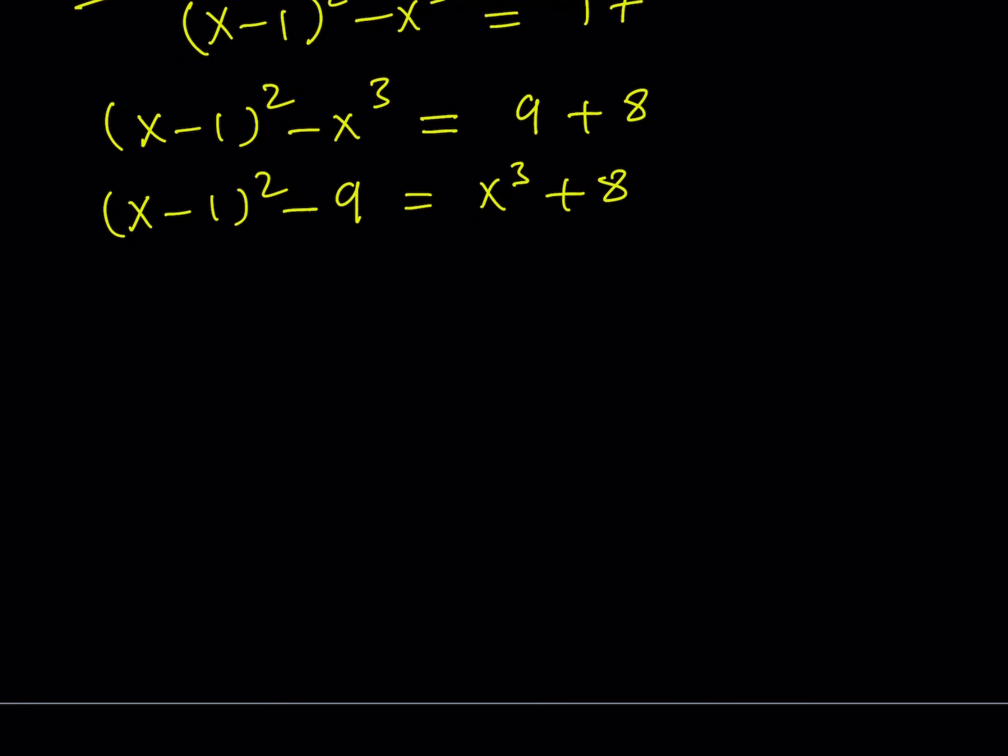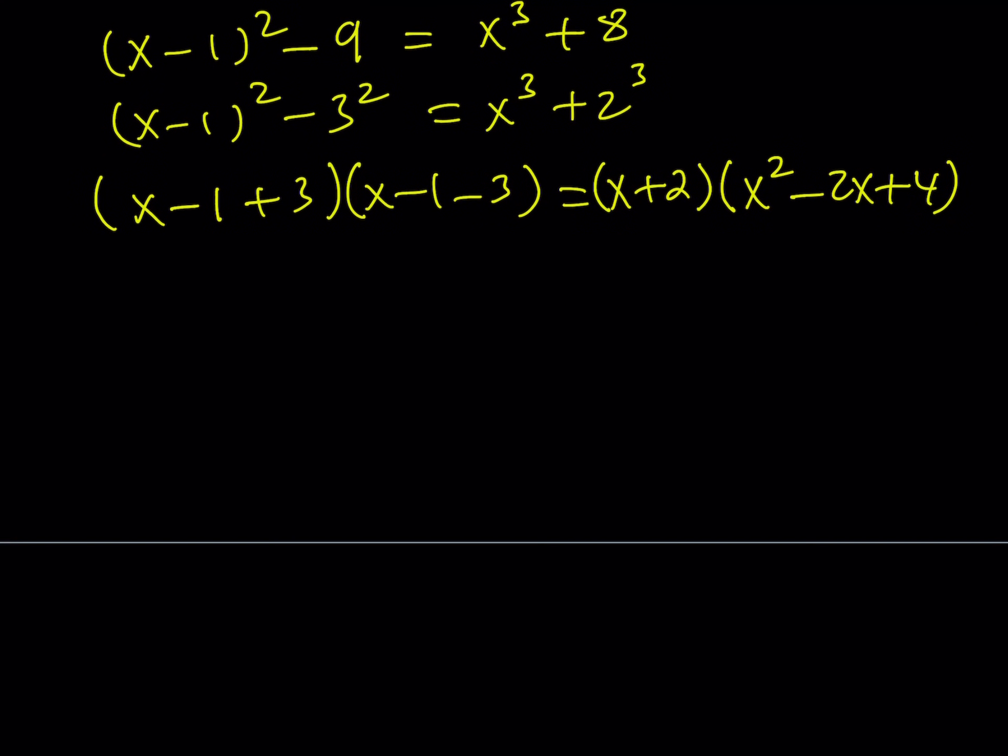Now we can factor it. So we can write this one as x minus 1 quantity squared minus 3 squared, and we can write this as x cubed plus 2 cubed. We have formulas for these, so let's go ahead and do it. x minus 1 plus 3, and then x minus 1 minus 3. a squared minus b squared, that's the difference of two squares, one of the most important identities in algebra or mathematics in general. This is the sum of two cubes.